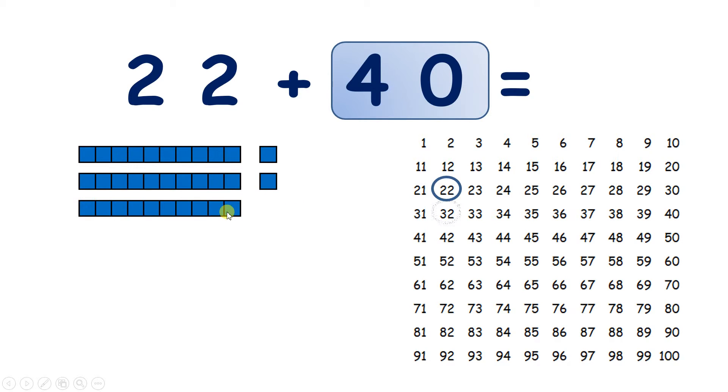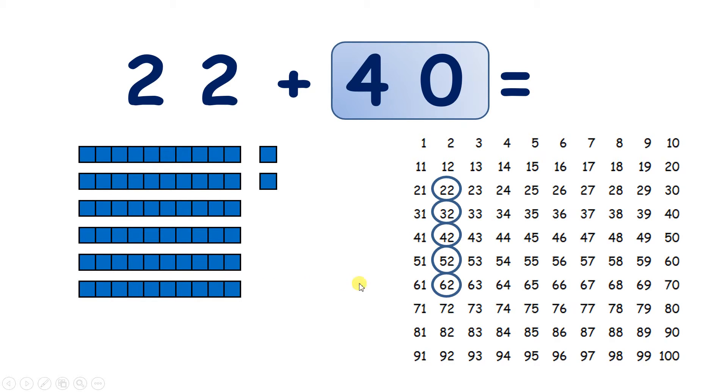So one more ten takes us to 32. Two tens takes us to 42. Three tens takes us to 52. And four tens takes us to 62. So we've added 40 because we've added those four tens. So 22 plus 40 is 62.